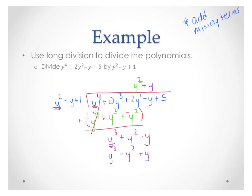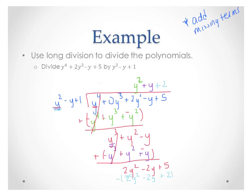We subtract those — distribute that minus sign. The y cubes cancel. We get 2y squared minus 2y plus 5. Then ask: y squared times what is 2y squared? The answer is 2, so we write plus 2. Multiply to get 2y squared minus 2y plus 2. Subtract all that — 2y squared cancels, 2y cancels — and we're left with 3. We write the remainder as plus 3 over y squared minus y plus 1. That whole expression is our answer.